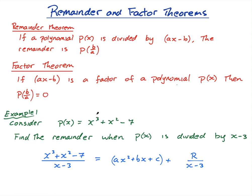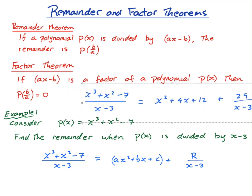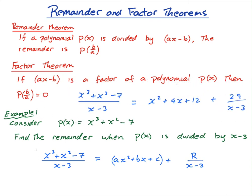So this polynomial, this cubic, I have taken from the previous lesson and we've actually divided this by x minus 3. And we actually got, let me bring out the answer here. So when we divided x cubed plus x squared minus 7 by x minus 3, we got x squared plus 4x plus 12 plus 29 over x minus 3. And we said the remainder was 29.